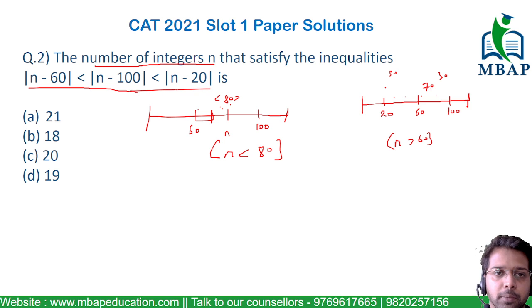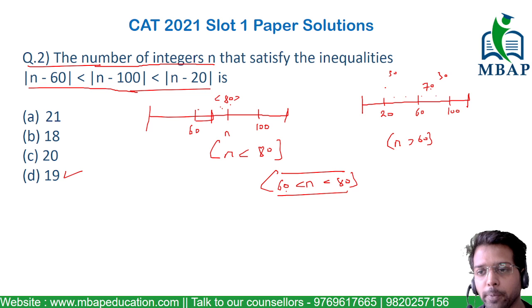Satisfying all the given conditions in this question, I found the range of n to be more than 60 and less than 80. See how many values are there between 60 and 80. You will see 19 numbers satisfying this condition. So you will mark option D as the final answer for this question.